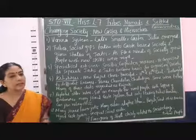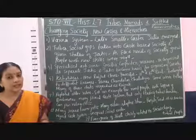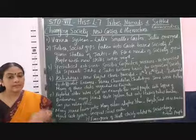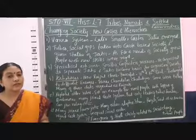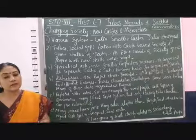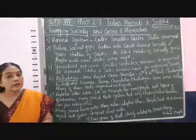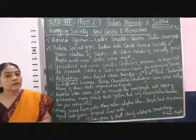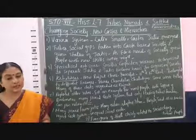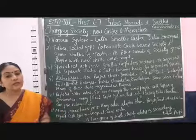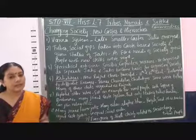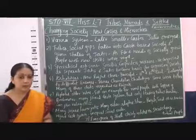Those who joined the caste system and wanted to become rulers had to belong to a big tribal family. Many small tribal groups were also included in the caste-based society, but they remained as the lower Jatis. The bigger and more influential tribal groups became the Rajputs and later became rulers.